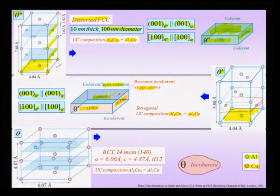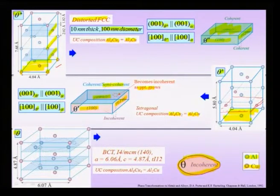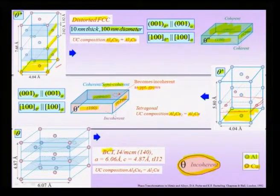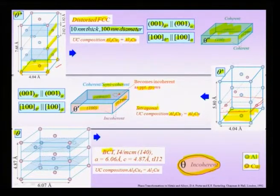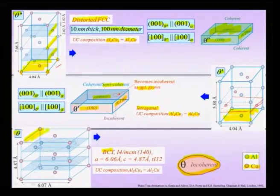The final equilibrium phase theta has all interfaces incoherent with the matrix. This is a body-centered tetragonal structure. So we started with a distorted FCC for theta double prime, then a tetragonal structure for theta prime, and now a body-centered tetragonal structure — again having planes of pure copper at the top or bottom and planes of pure aluminium along the [001] direction.